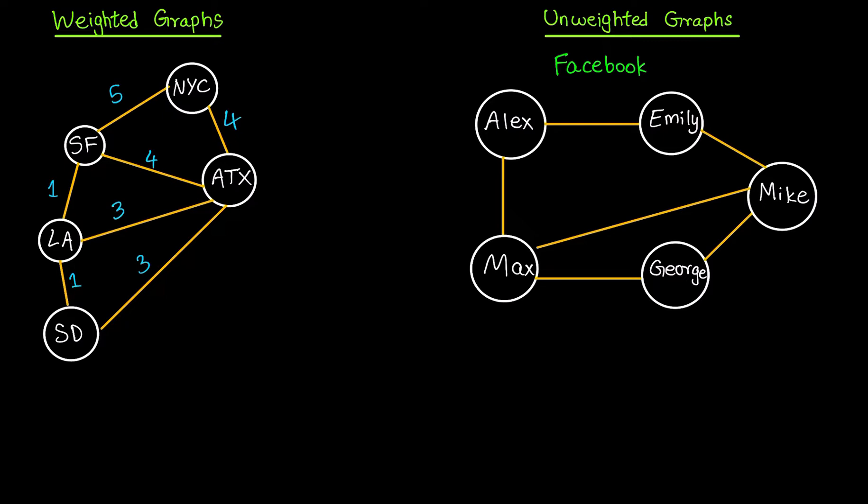One great example would be Facebook. In Facebook, if there are two friends we can consider it as a bi-directional edge, which means if Alex is friends with Emily, Emily has to be friends with Alex. There's really no other way, so that's the reason we represent it using a bi-directional edge which is nothing but an undirected edge.